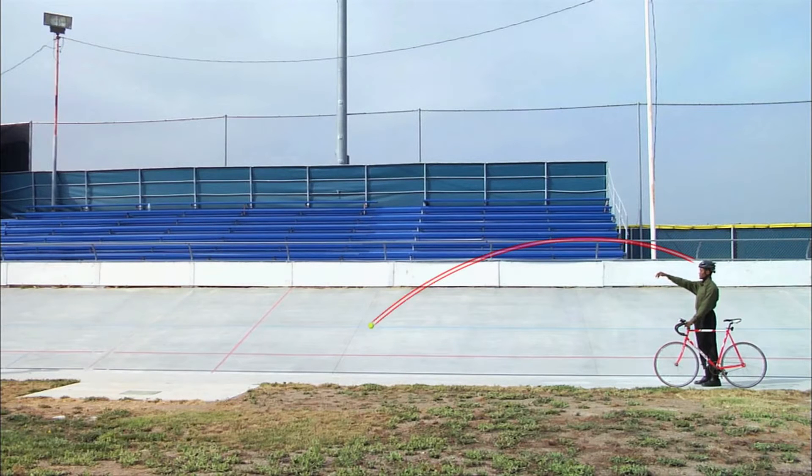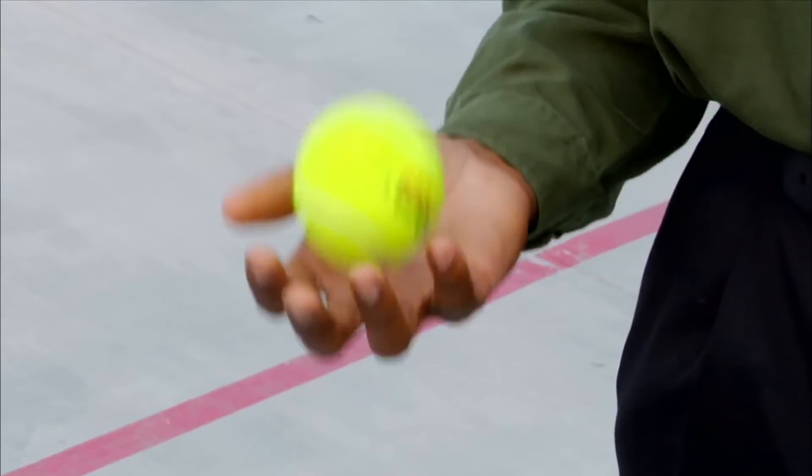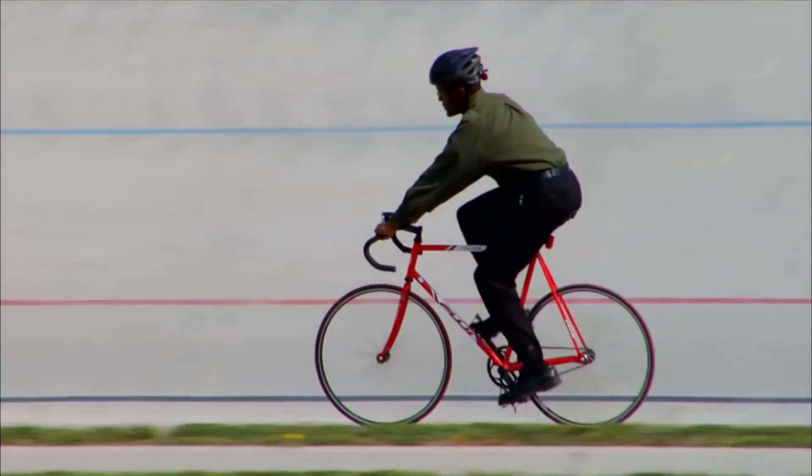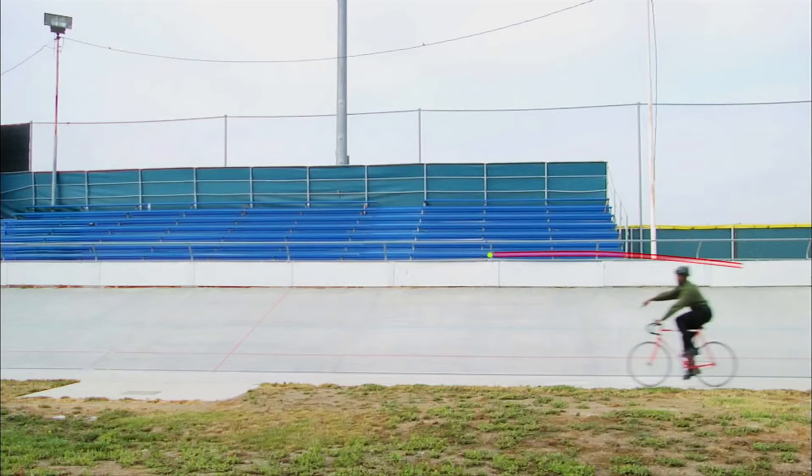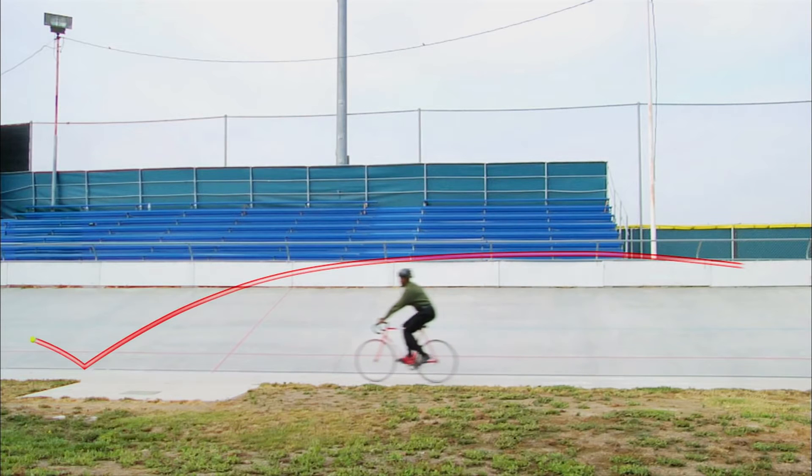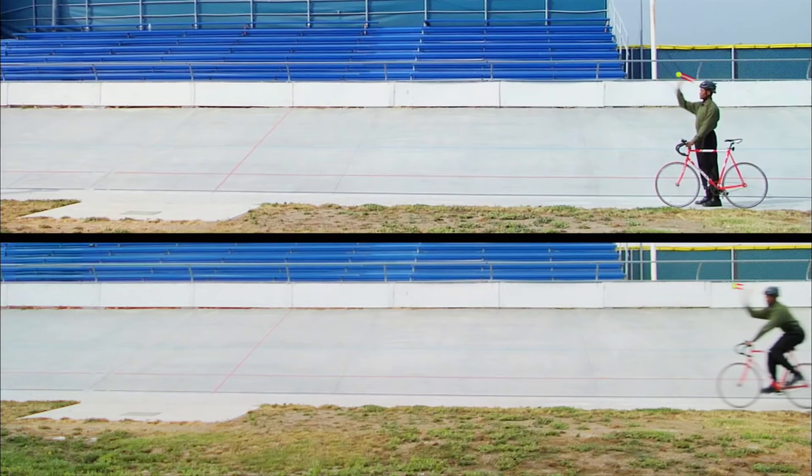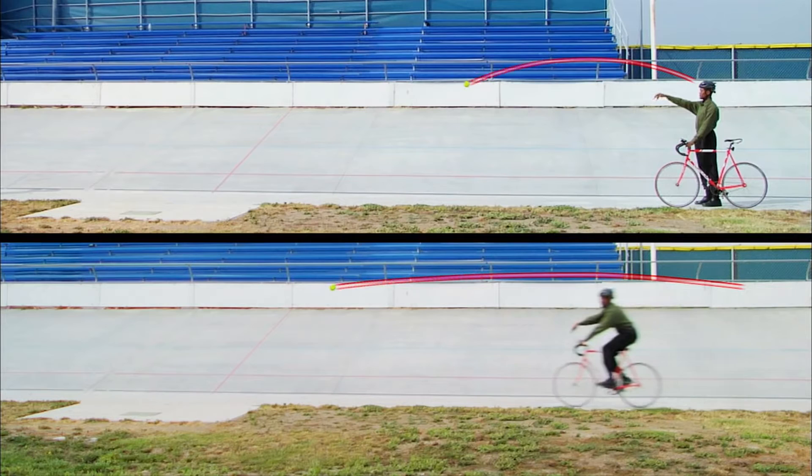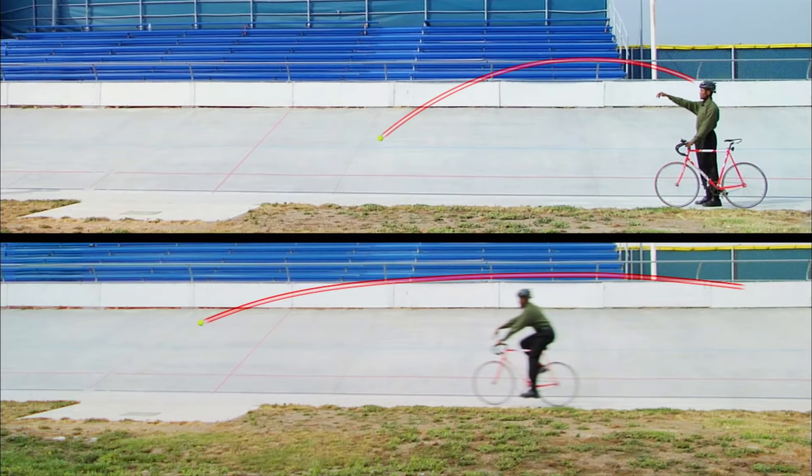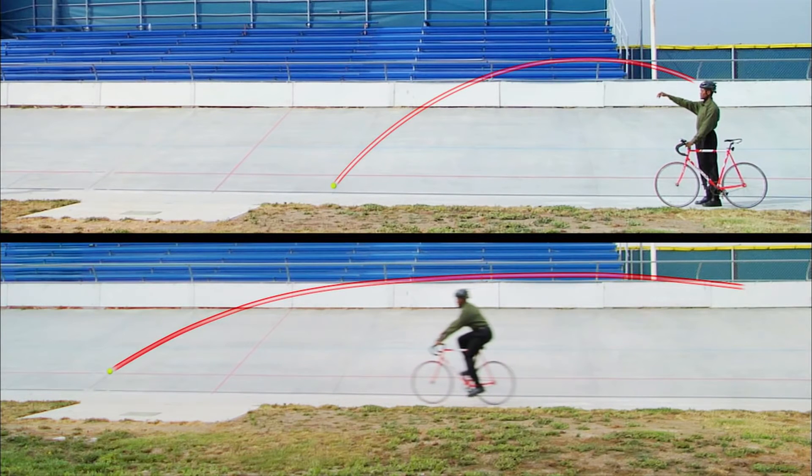It lands roughly halfway down the track. Next, he'll throw the ball again, but this time from a moving bike, with different results. If I throw the tennis ball at that same speed while riding the bike, it'll go faster because it's the speed of the tennis ball plus the speed of the bike, and so it'll go further. Compare the two tosses, and the difference is clear. The ball goes faster and farther when thrown from the moving bike. It makes perfect sense.